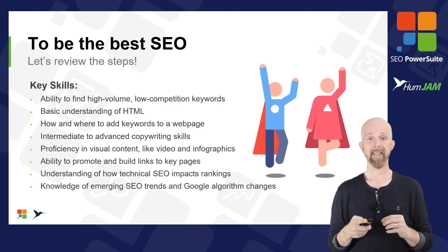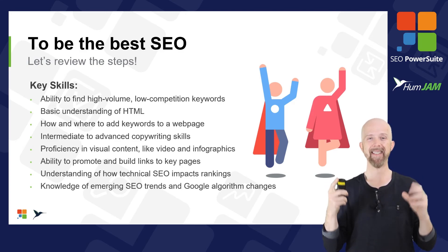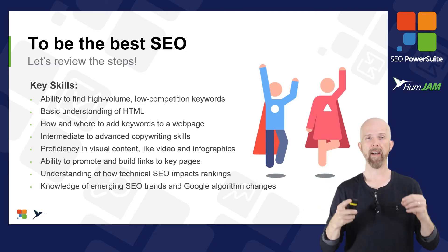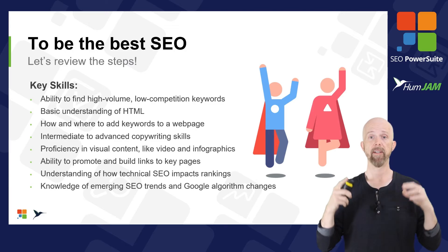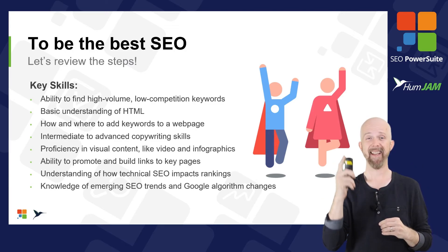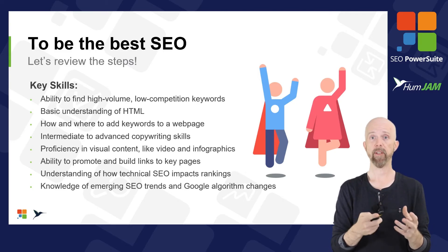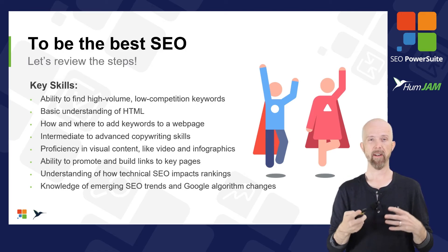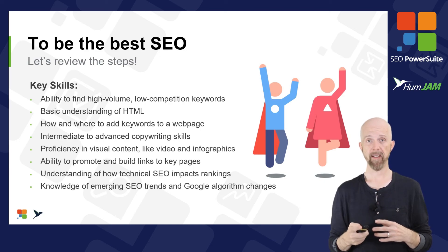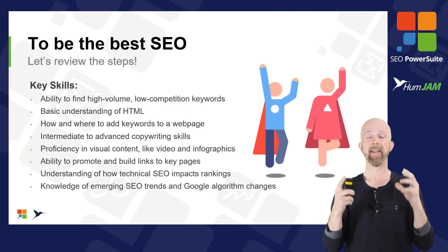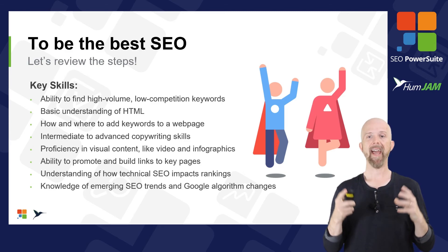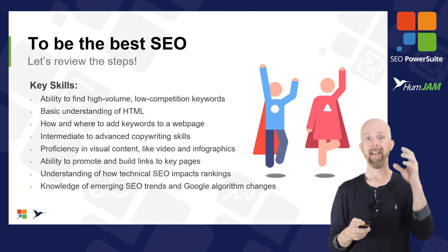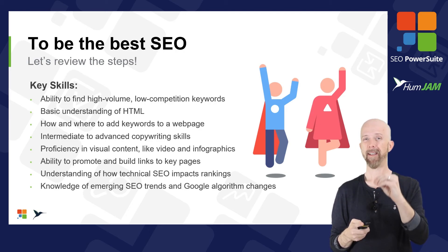To be the best SEO, the key skills are: the ability to find high-volume, low-competition keywords — if you can get good at that, that's going to make you a hero. A basic understanding of HTML, because that's what you'll need for on-page editing. Intermediate to advanced copywriting skills will help. Proficiency in visual content will help. Understanding how technical SEO impacts rankings and fixing little issues will impact ranking. And knowledge of emerging SEO trends and algorithm changes — that's going to help you be the best in SEO.